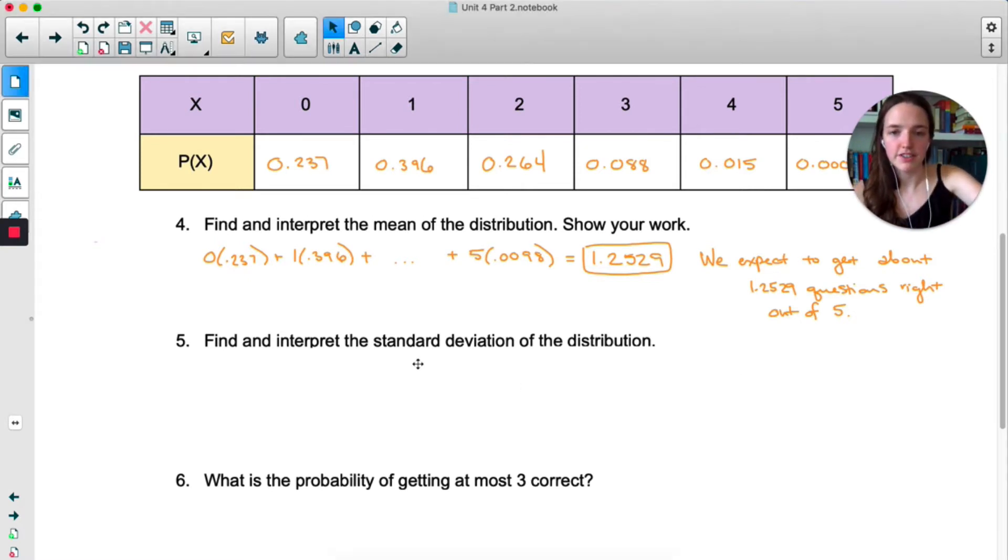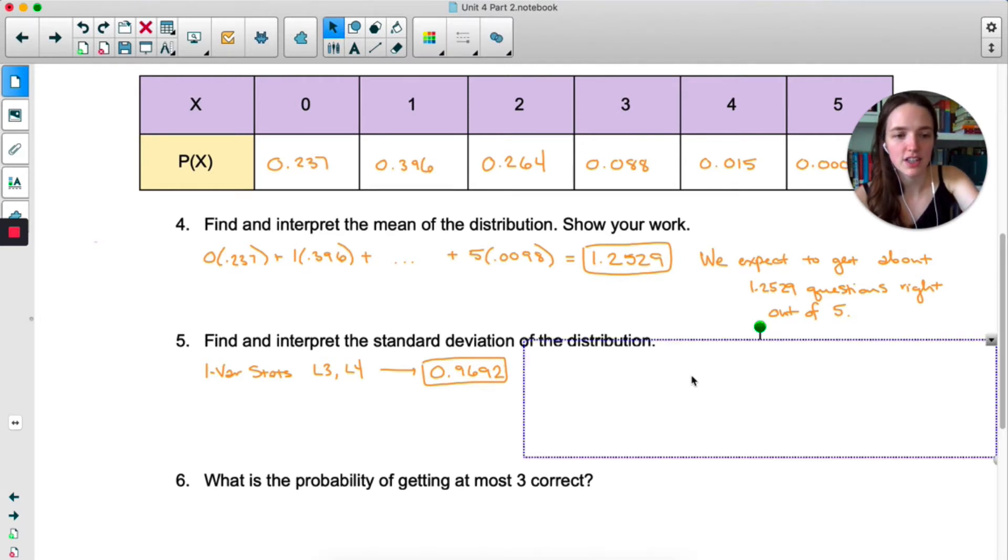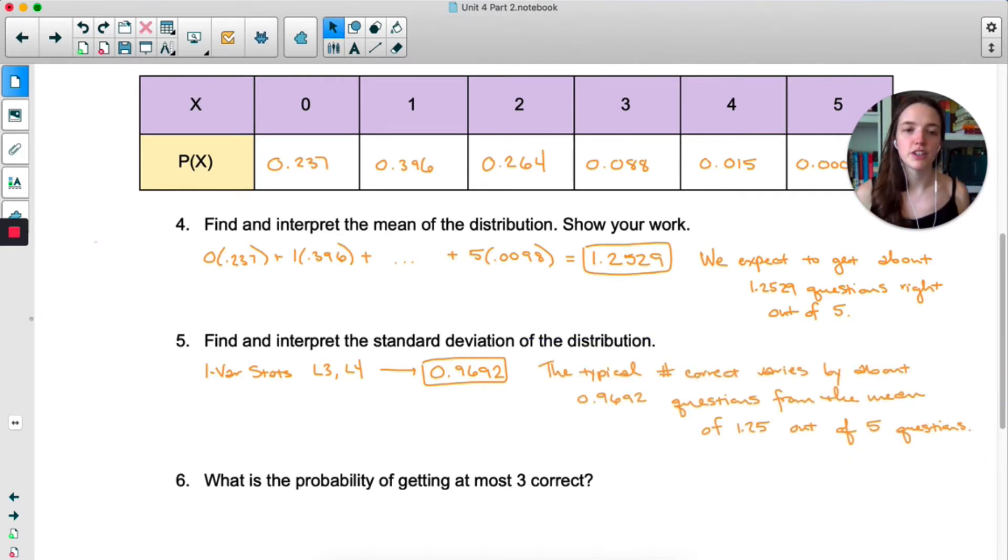And then for standard deviation, I used the calculator because I didn't like doing that by hand. I did 1var stats, mine was typed into L3 and L4. There's my standard deviation, and the typical number of correct answers varies by about 0.9692 questions from the mean of 1.25 out of 5. It rolls right off the tongue.